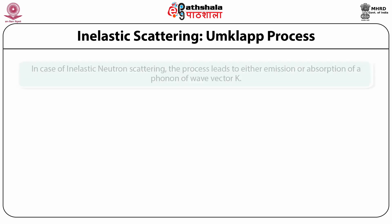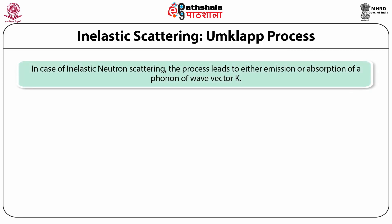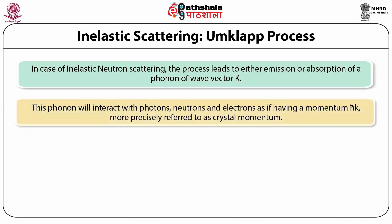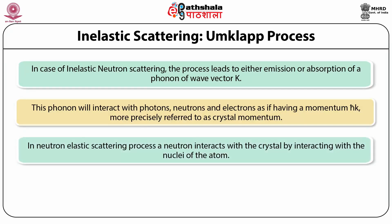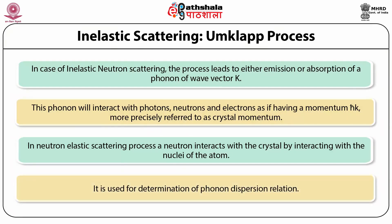In inelastic scattering, the process leads to either emission or absorption of a phonon of wave vector K. This phonon interacts with the crystal. A phonon carries no physical momentum since phonon coordinates other than k = 0 are linked with relative coordinates of the lattice constituents, but for practical purposes a phonon is considered to have crystal momentum. In neutron inelastic scattering, a neutron interacts with the crystal nuclei, and the process is used for determination of phonon dispersion relations.